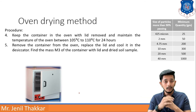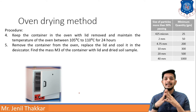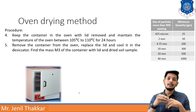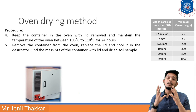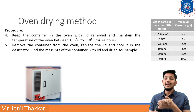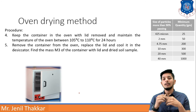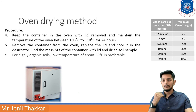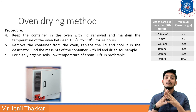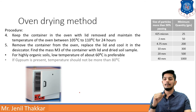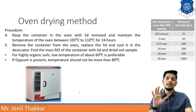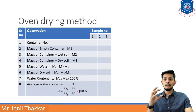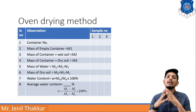After 24 hours, remove the container from the oven, replace the lid, and cool it in the desiccator. The mass of the container with lid and dried soil — which now has no moisture — is M3. Note: for highly organic soils, a lower temperature of about 60°C is preferable, and if gypsum is present, temperature should not exceed 80°C, otherwise results will be inaccurate.